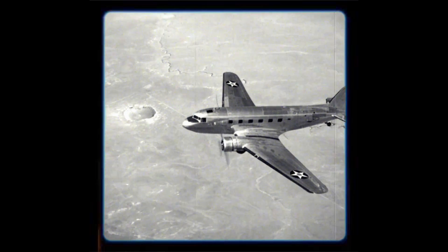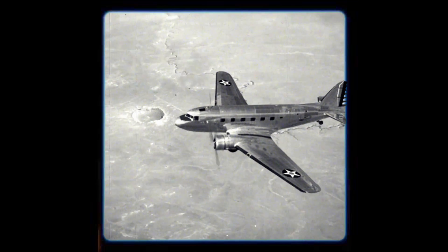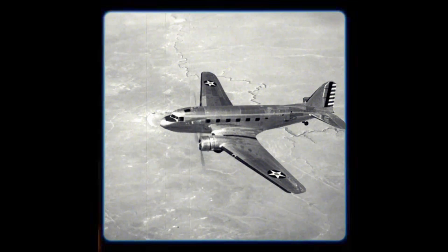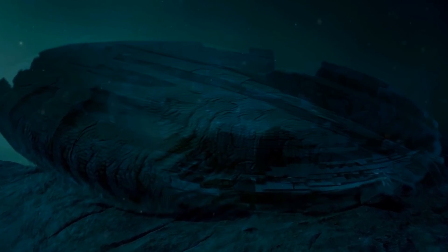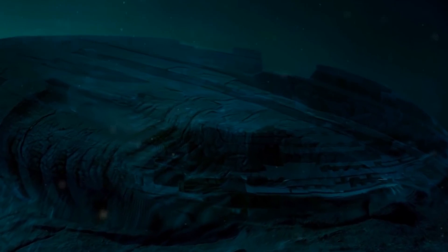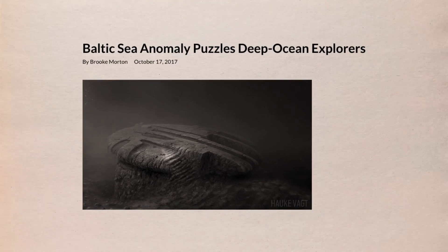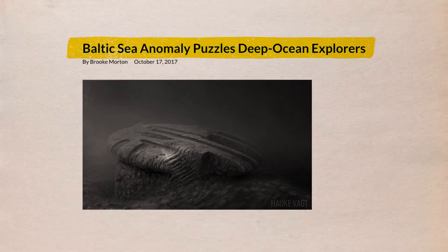The most accepted theory among scholars is that the object was a German ballistic object that fell into the sea during World War II. The elaborate lines that resemble ramps, steps, and other structures reveal that the construction was created by humans rather than natural forces.